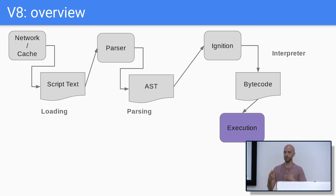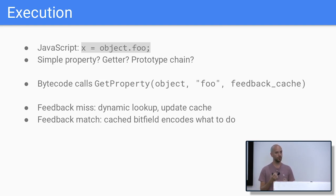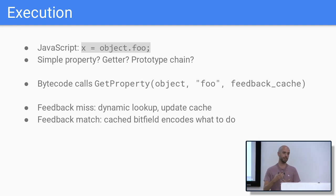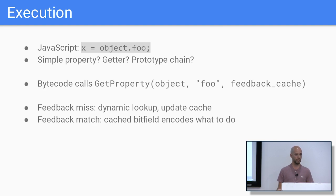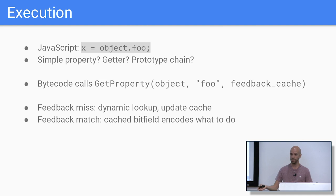Once bytecode is generated, we can start executing it. JavaScript is a dynamic language, and even simple things like loading object.foo can have complex semantics — it could mean loading a simple property, calling a getter, or walking a prototype chain. Figuring this out dynamically is slow, so we cache it and hope the next time we encounter it we do the same thing. We call get property with two slots in the feedback cache: the first stores the shape of the object, and the second a bitfield containing what to do. If the shape matches, we don't need dynamic lookups. If not, we figure it out dynamically and update the feedback cache for next time.